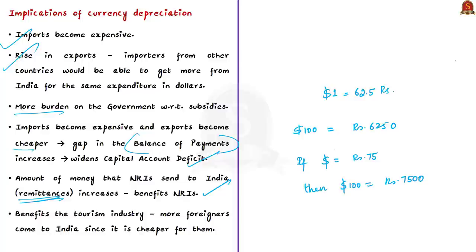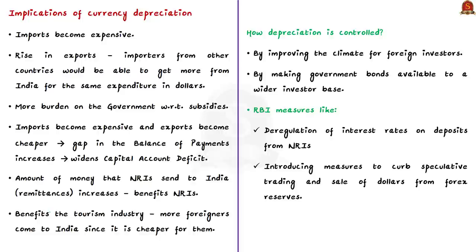How can rupee depreciation be controlled? Some measures include improving the climate for foreign investors — more investments will lead to rupee appreciation. Another measure is making government bonds available to a wider investor base. The RBI can take measures like deregulation of interest rates on deposits from NRIs. Measures can also be introduced to curb speculative trading, which prevents sudden falls in the share market. These are some measures that can be taken to strengthen the rupee.